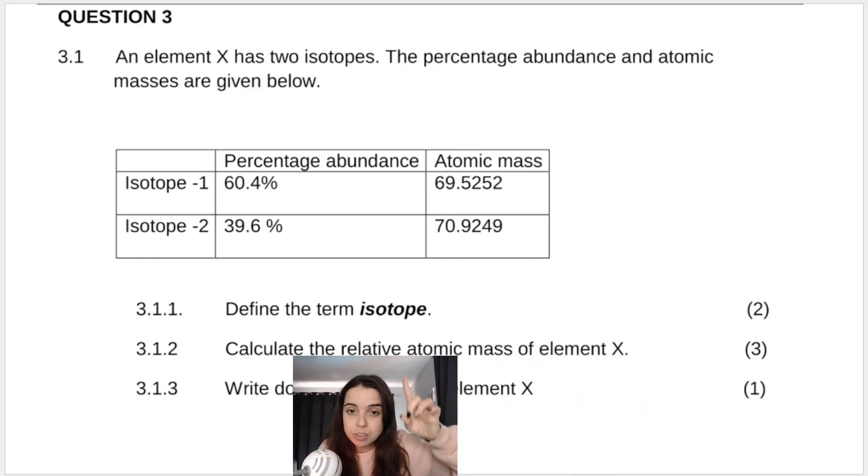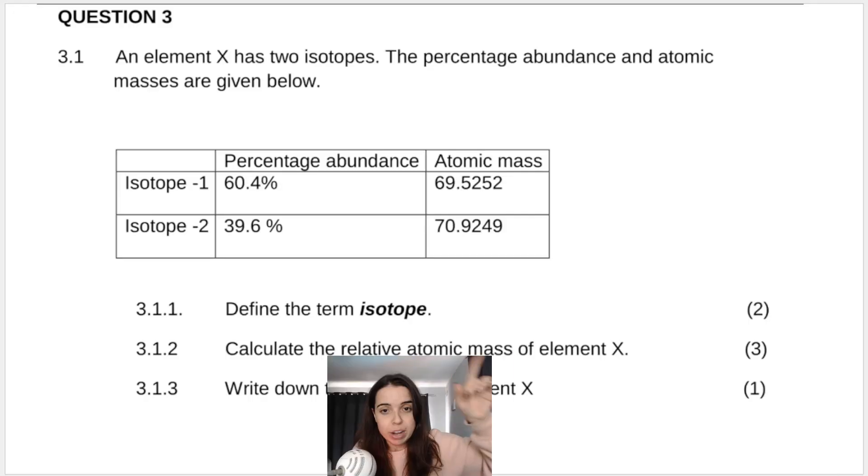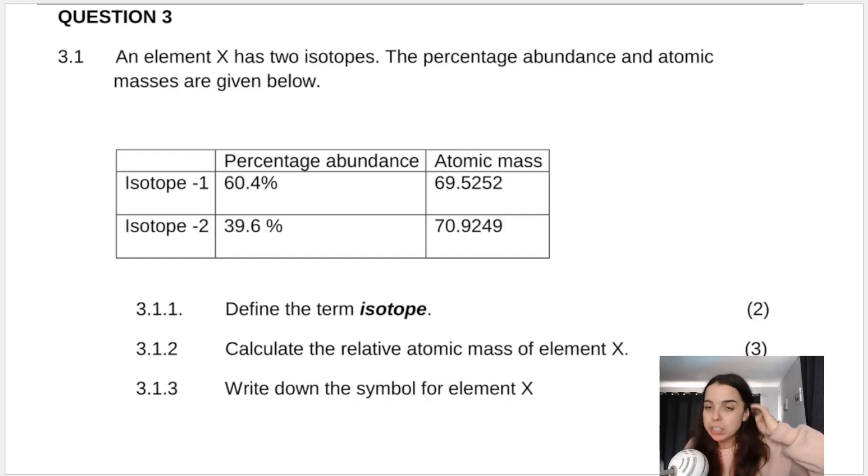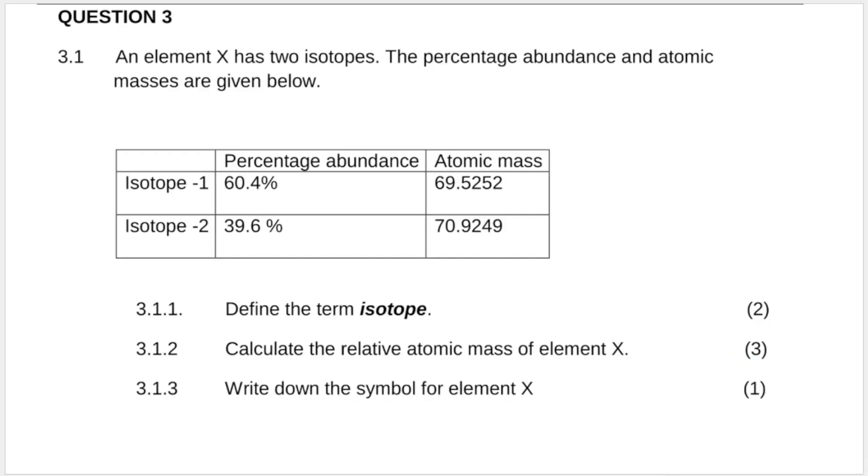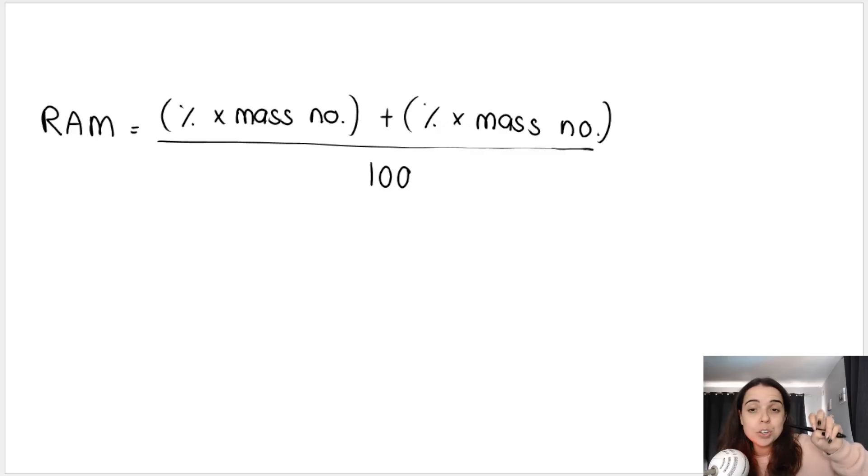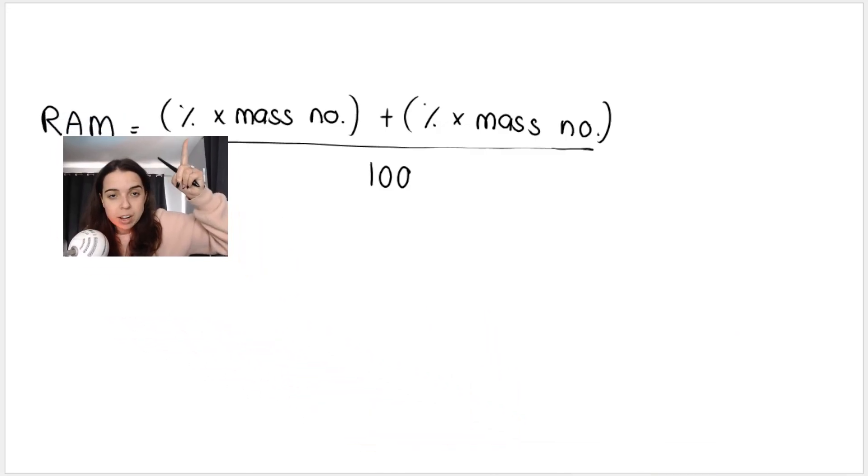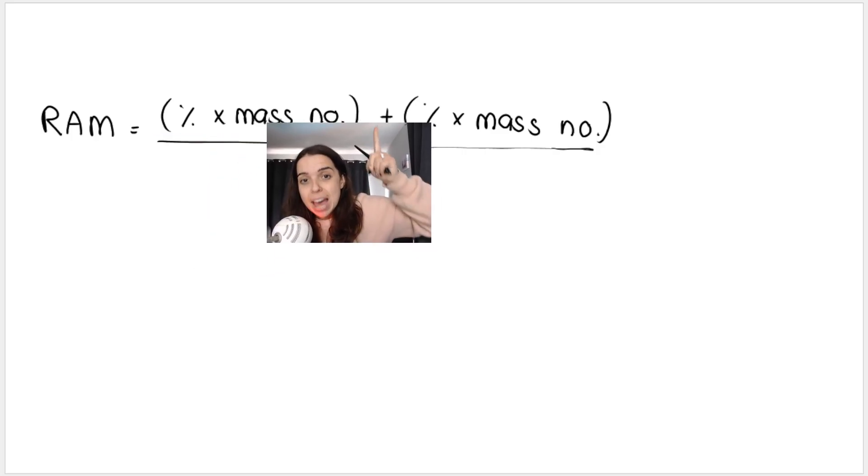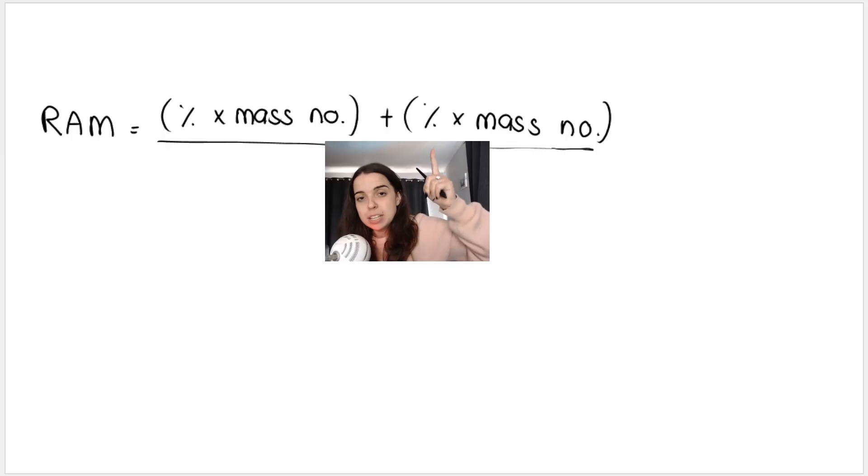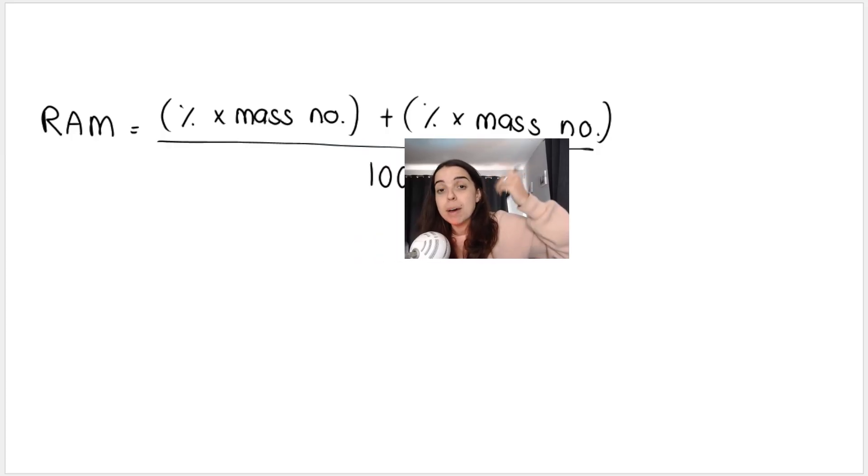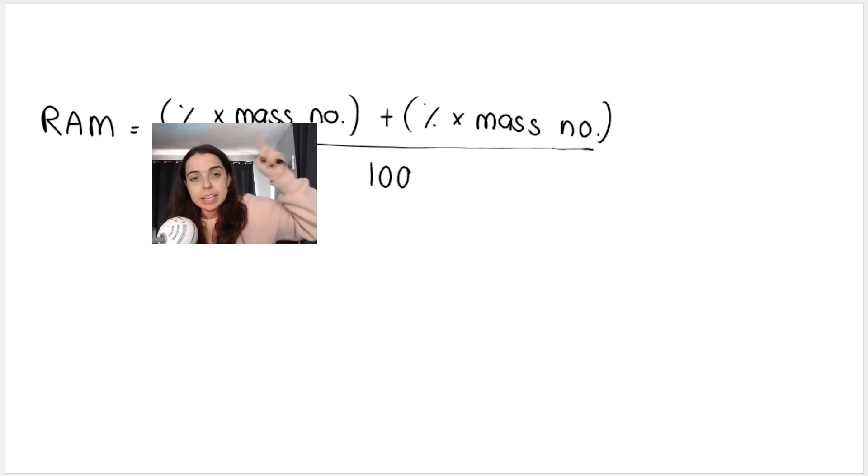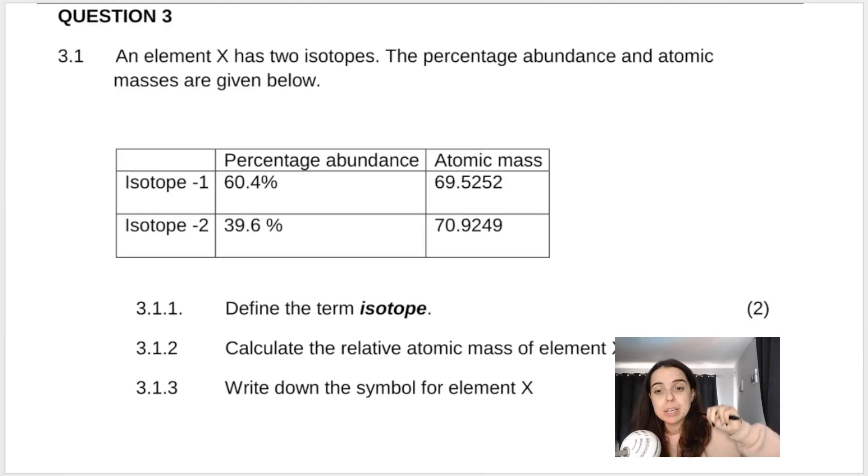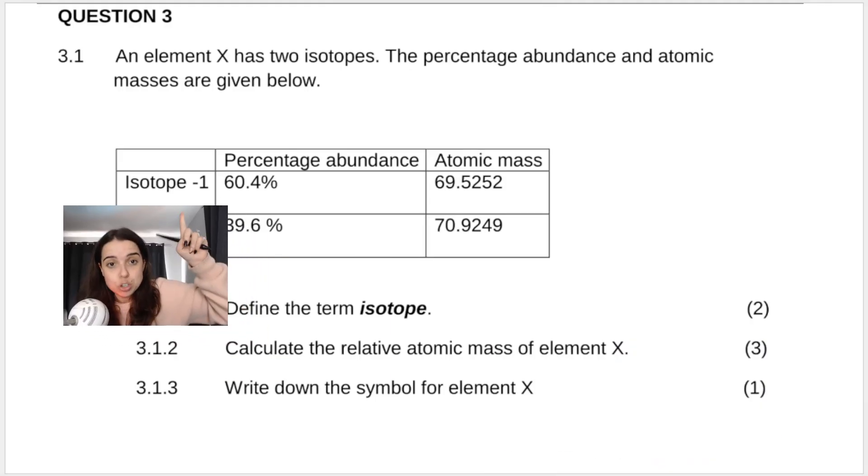3.1.2 now wants me to calculate the relative atomic mass, RAM, relative atomic mass, of element X. It's three marks, so it's a calculation and this is how we do it. So this is essentially the formula you use. You take the percentage of the one isotope times the mass number of the one isotope plus, that must be a plus, percentage of the other isotope multiplied by the mass number of the other isotope. Each bracket represents one isotope. I have two brackets because in this question I have two isotopes.